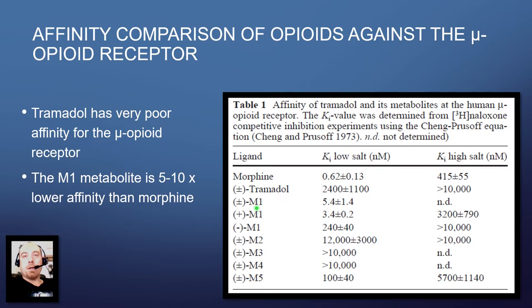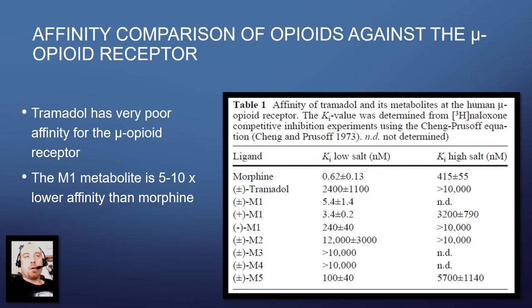The M1 racemate and its positive isomer have somewhat better affinity. They tested two different salt conditions, but showed basically the same idea: if you simply look at receptor binding, tramadol and its metabolites bind to the mu opioid receptor with varying affinity. But that doesn't tell the whole picture, because we're looking at agonists — they're activators — and just binding doesn't tell you a lot. Morphine has stronger affinity; M1 has stronger affinity than tramadol, and tramadol is one of the weakest. So let's move on and look at the actual efficacy data.